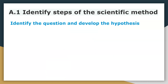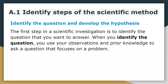For the first step, identify the question. The first step in a scientific investigation is to identify the question that you want to answer. When you identify the question, you use your observations and prior knowledge to ask a question that focuses on a problem. Effectively, all you're doing in this part is trying to figure out what's the question — what are you trying to solve?